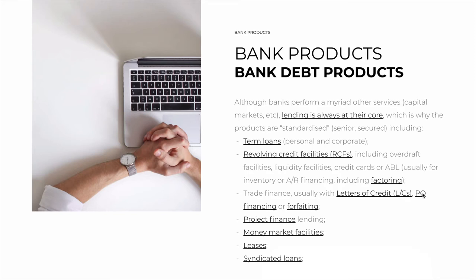There's also PO financing, or purchase order financing, where the borrower obtains a loan to satisfy a purchase order — saying, hey, we have a purchase order for 10 million of product, we need a loan to actually create that product. Or forfeiting, which is similar to factoring: the bank buys the rights to a set of goods being imported. So the exporter doesn't own the borrower — they own the bank now, and the bank usually advances a part of this to the borrower.